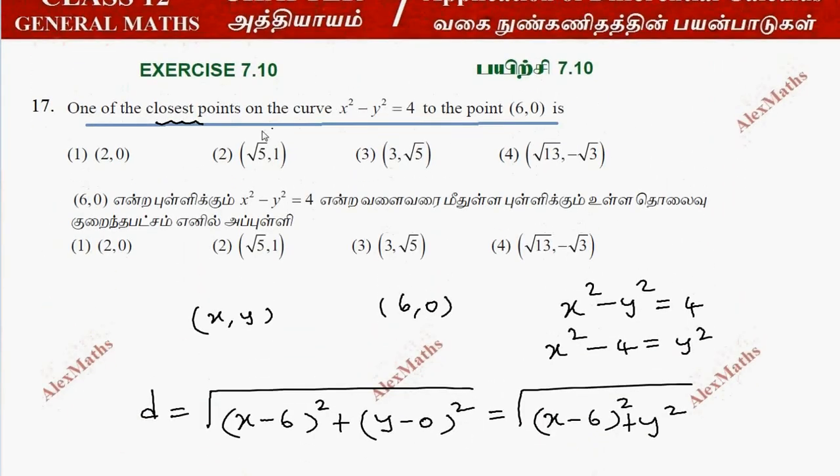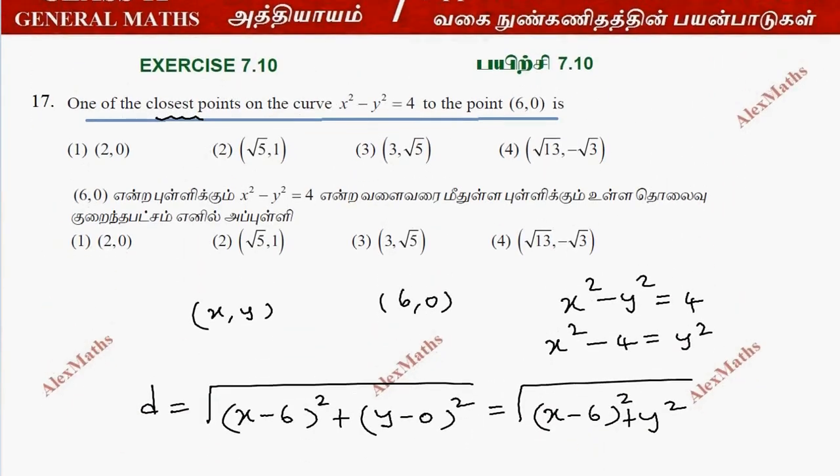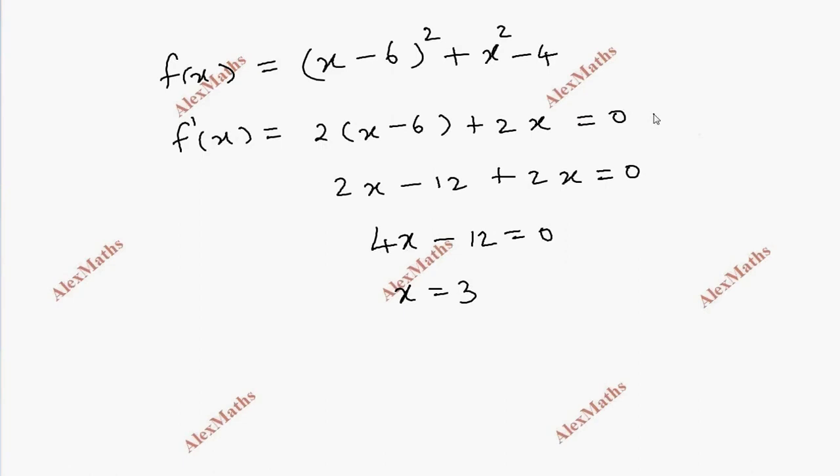f double dash of x equals 2 plus 2 equals 4, which is greater than 0. Therefore it is a minimum, the minimum closest point.